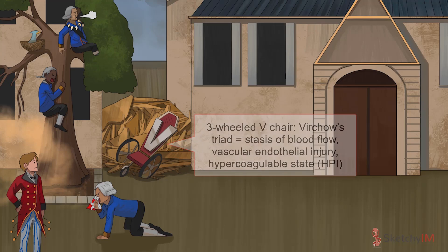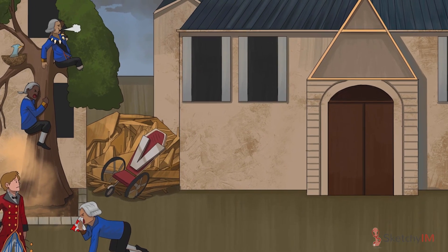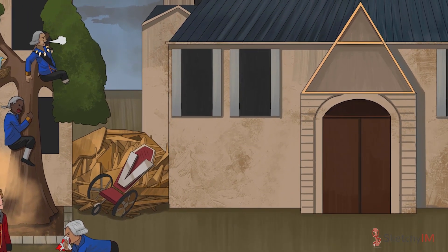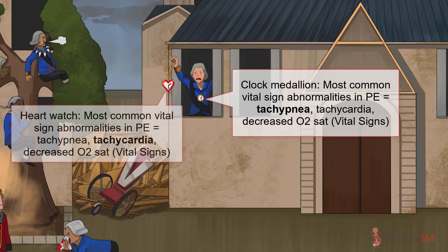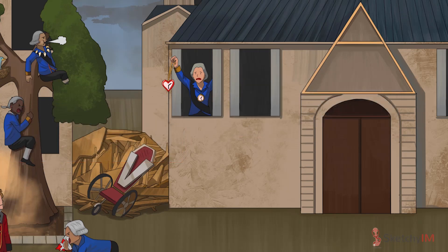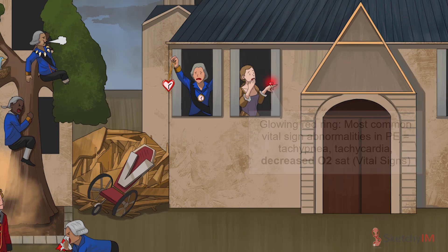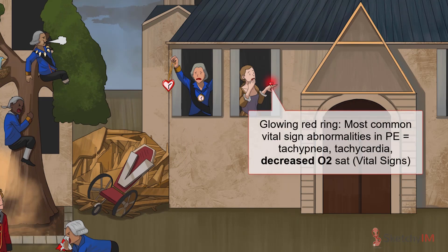With the history out of the way, let's move on to the physical examination for PE. Some of the earliest clues can be seen on vitals. The most common vital sign abnormalities in PE are tachypnea, represented by the clock medallion worn on this royalist's chest; tachycardia, represented by the heart-shaped pocket watch he's holding up; and decreased oxygen saturation, represented by this glowing red ring that looks suspiciously like a pulse ox.